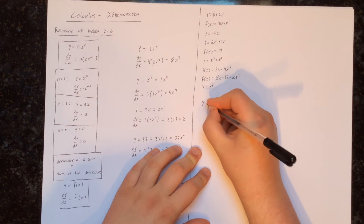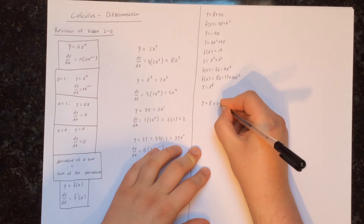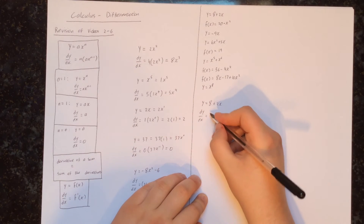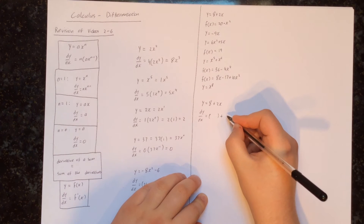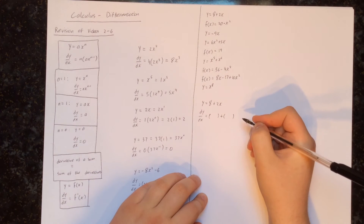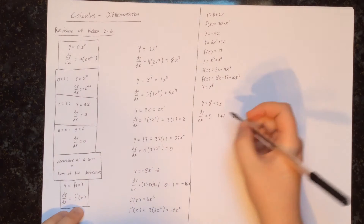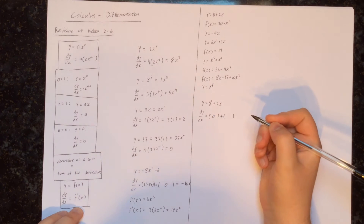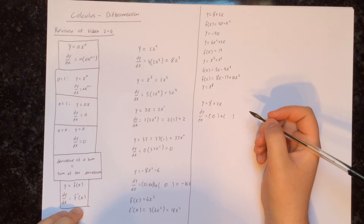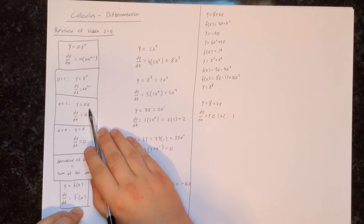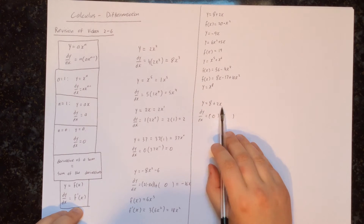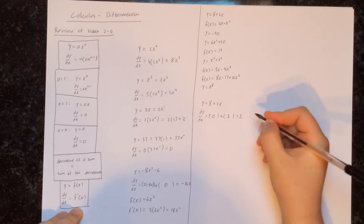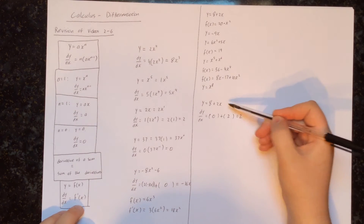We start with y equals 8 plus 2x, and we want to find the derivative. We're finding the derivative of two things added together, so we find the derivative of each separately and add them. The derivative of 8 is 0 since it's a constant. The derivative of 2x is just 2, since it's a number times x. So 0 plus 2 equals 2, and the derivative of 8 plus 2x is 2.